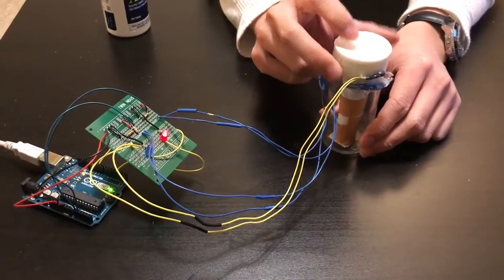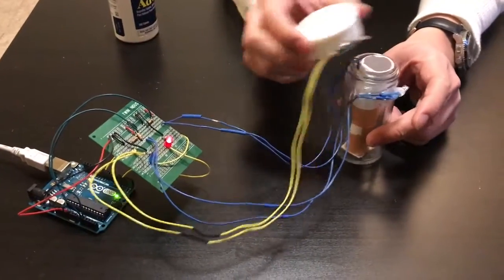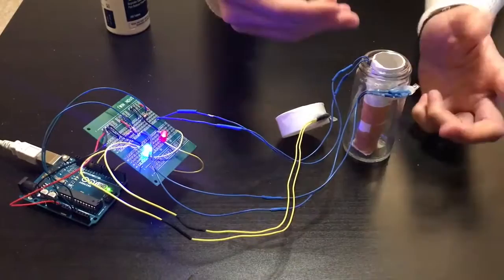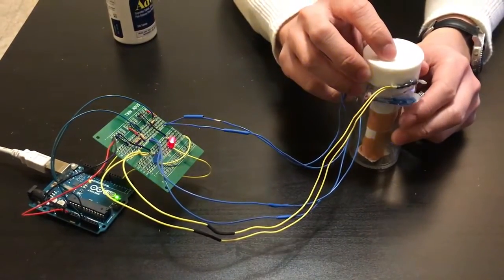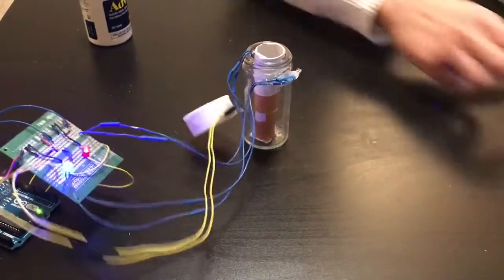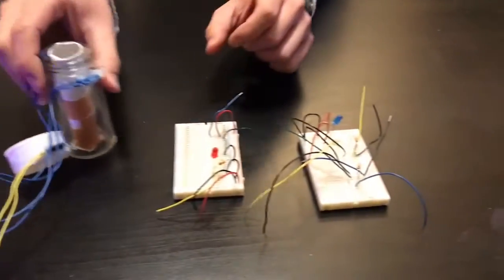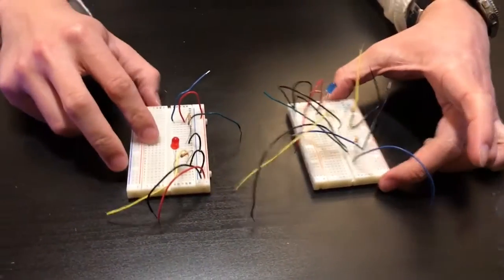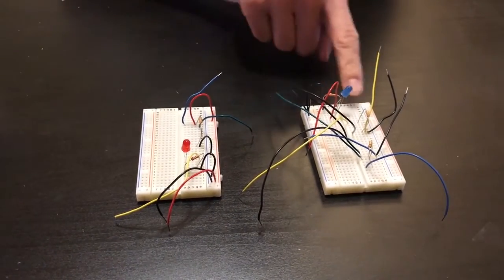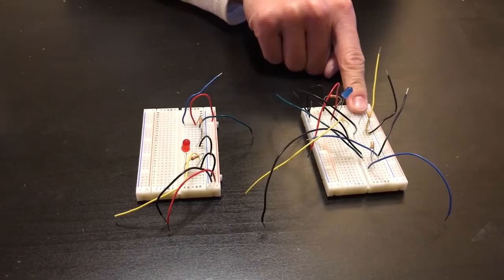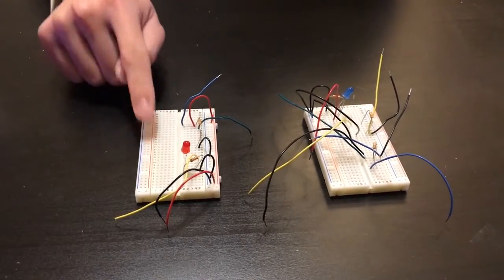So how our smart pill bottle works is essentially we have two core components. We have the pressure sensitive resistor and also the IR receiver and emitter. These are the two core circuits of our entire device.